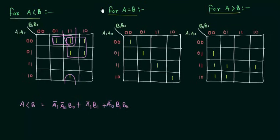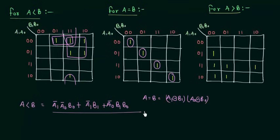In the second case for the second output when A is equal to B, you can see you cannot do the groupings because the ones are in a diagonal position. So you have to write individually the values. So I am not writing it down, you can do it by yourself, but I will write down the minimized answer that you will find after the minimization, which is A1 XNOR B1 AND A0 XNOR B0. So these are the two expressions that we have got for the first two outputs.